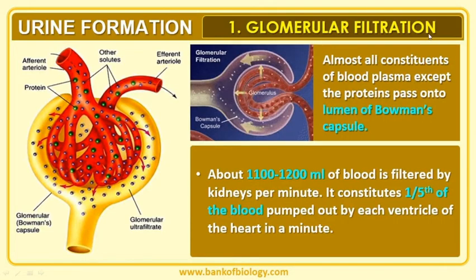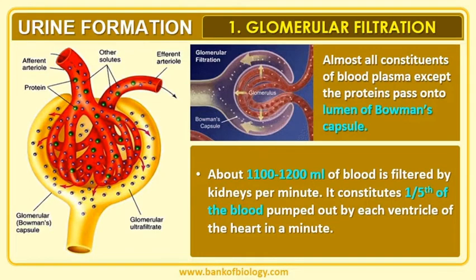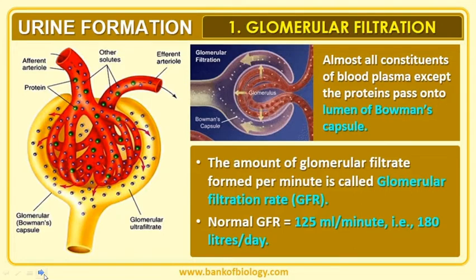In glomerular filtration, almost all constituents of blood plasma, except proteins, pass into the lumen of Bowman's capsule. About 1100 to 1200 ml of blood is filtered by the kidney per minute — that constitutes one-fifth of the blood pumped out by each ventricle of the heart per minute. That rate is referred to as the glomerular filtration rate. The normal glomerular filtration rate is 125 ml per minute, which is 180 liters per day. However, whatever is filtered is not entirely converted into urine.